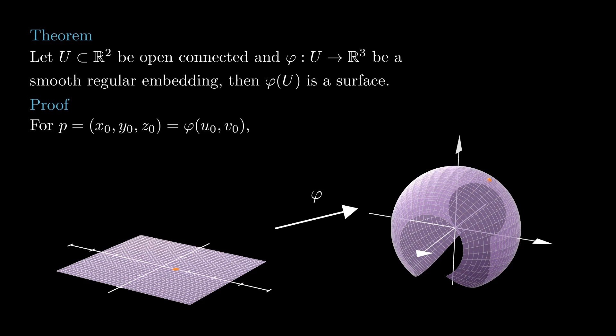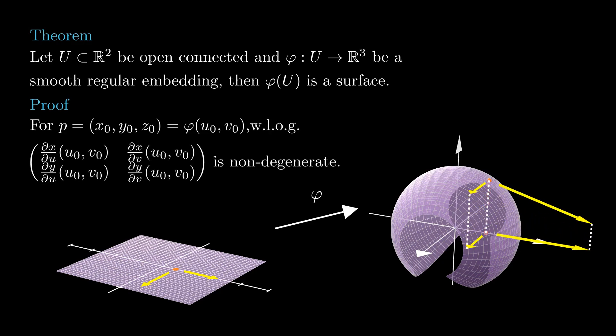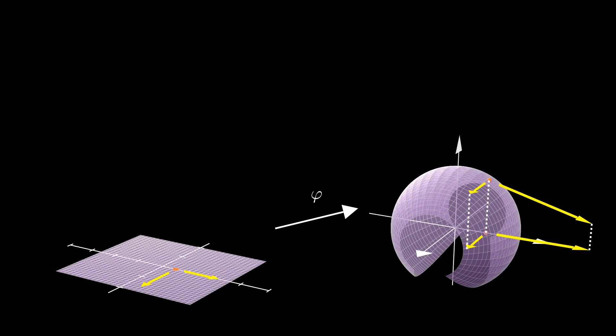the fact that the pair of partial derivatives of phi at (u0, v0) are linearly independent means that, projecting them onto a suitable coordinate plane, say the xy plane, they give a pair of linearly independent vectors, a basis of R2. So by the inverse function theorem,